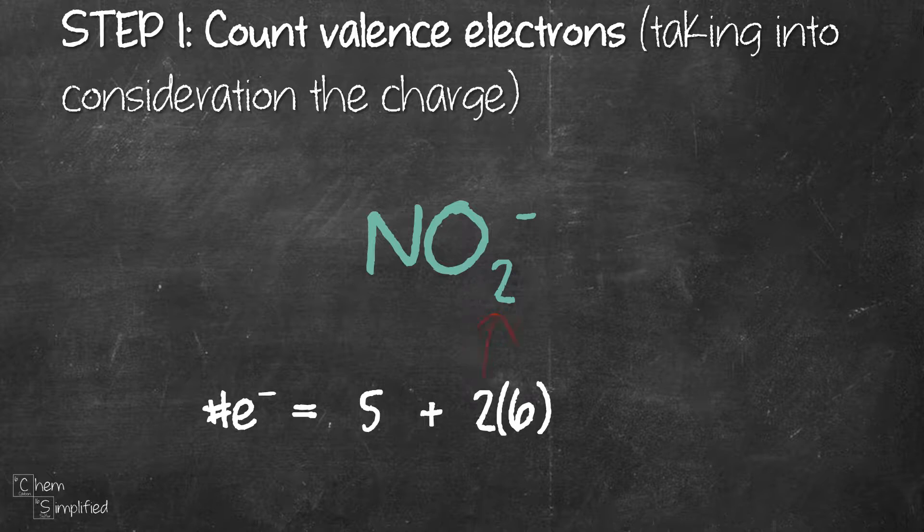Now we're not quite done yet because nitrite ion has negative one charge. So that means overall it has an additional one electron which means we need to add that one electron. So now we have a total of 18 electrons. That's the number of electrons we'll be working with for this ion.